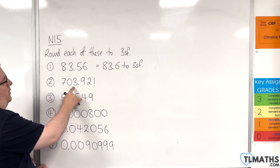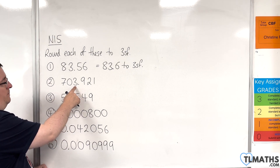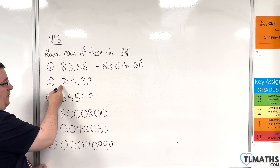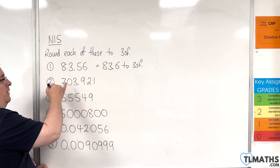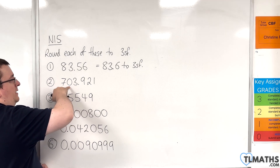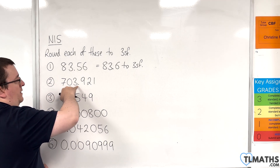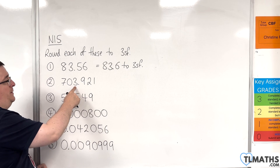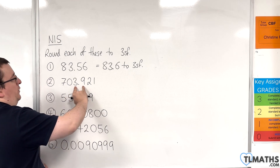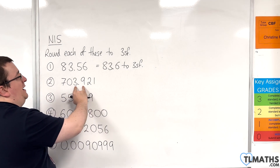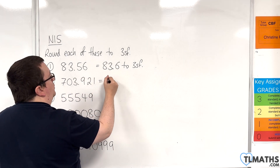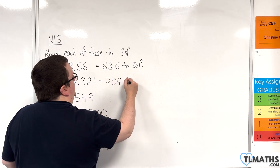Here the third significant figure is the three. This is the first non-zero value you come across from the left, then the next value is the second, then the third, fourth, fifth, sixth. So this is the third — look one to the right, it's a nine so we need to round up. So this is 704 to three significant figures.